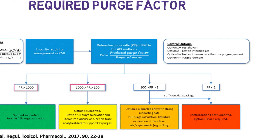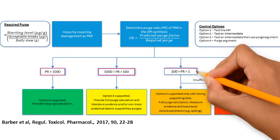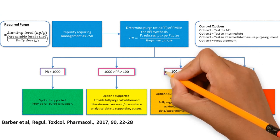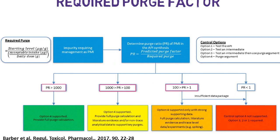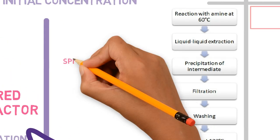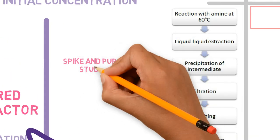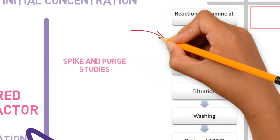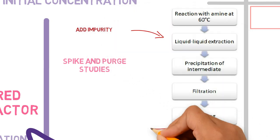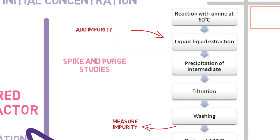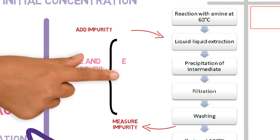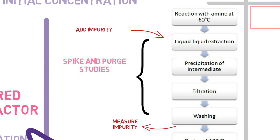If the value is between 1 and 100, stronger evidence should be provided to support the option 4 approach. This could be, for example, spike and purge studies. This is when you intentionally add big amounts of the impurity to a stage and measure it in a later stage, evaluating how much the stages in between actually purge and eliminate the impurity.